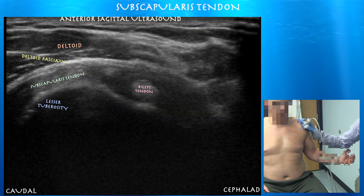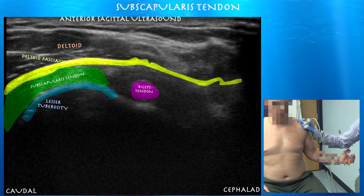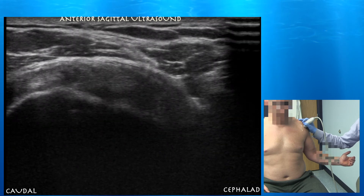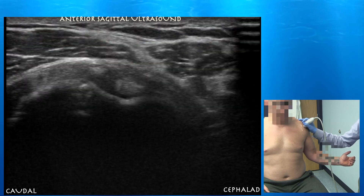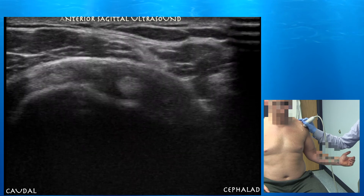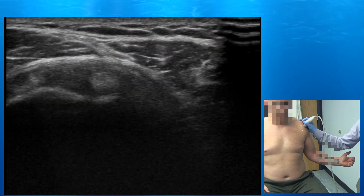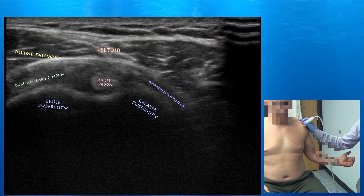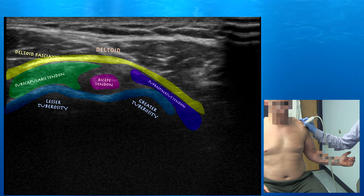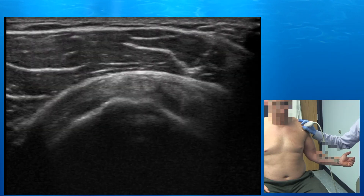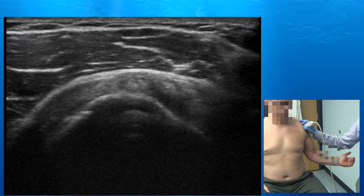As you go superior, your probe is essentially in a sagittal plane, but the biceps tendon curves around so you can actually see the biceps tendon in a cross-sectional or short axis view. Anything to the right of that, you're going to start getting into the supraspinatus. So here you're in a short axis view to the subscapular tendon and also a short axis view to the biceps tendon. We'll move into the biceps tendon next.